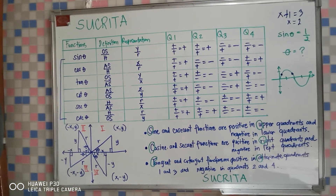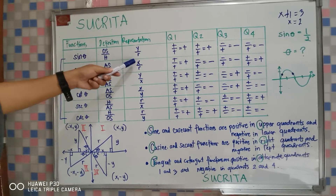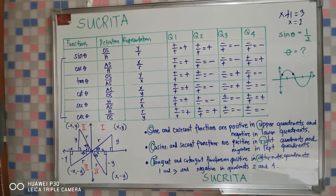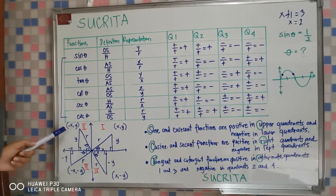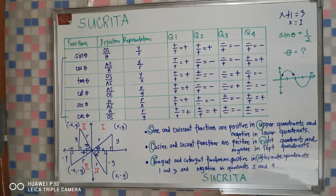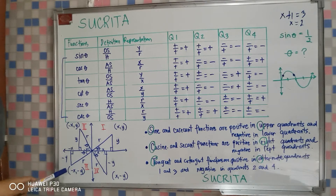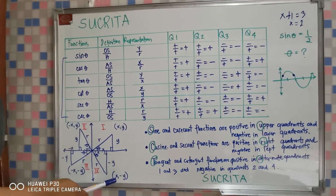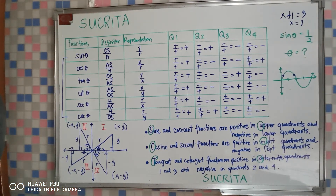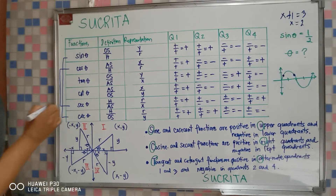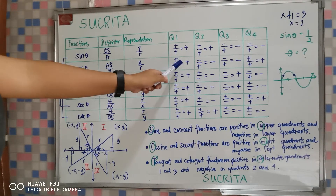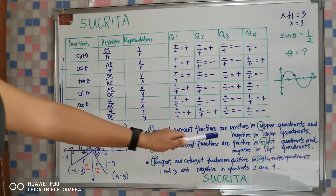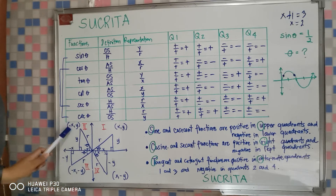Let's proceed to cosine θ. Cosine θ is equal to the adjacent side over the hypotenuse, which is x over r. In the first quadrant, x is positive and r is positive, so cosine is positive. In the second quadrant, x is negative divided by positive r, so the result is negative. In the third quadrant, x is negative divided by positive r, which is also negative. In the fourth quadrant, x is positive divided by r, which is positive. So the cosine and its reciprocal secant are positive in quadrants 1 and 4 — the right quadrants — and negative in quadrants 2 and 3 — the left quadrants.